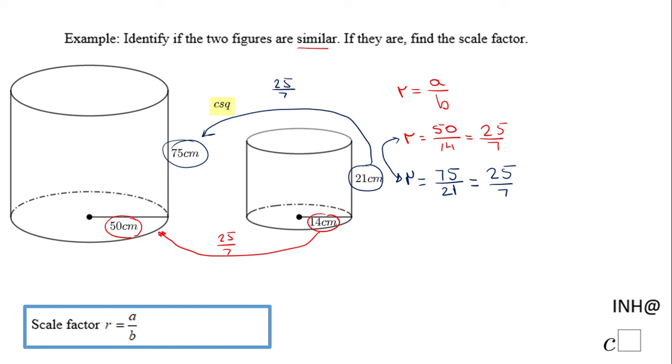But also you may see this scale factor backwards, so I'm gonna call it r1 here as 7 over 25. Okay, so this first one is when you go from small to large, so it's gonna be an enlargement.